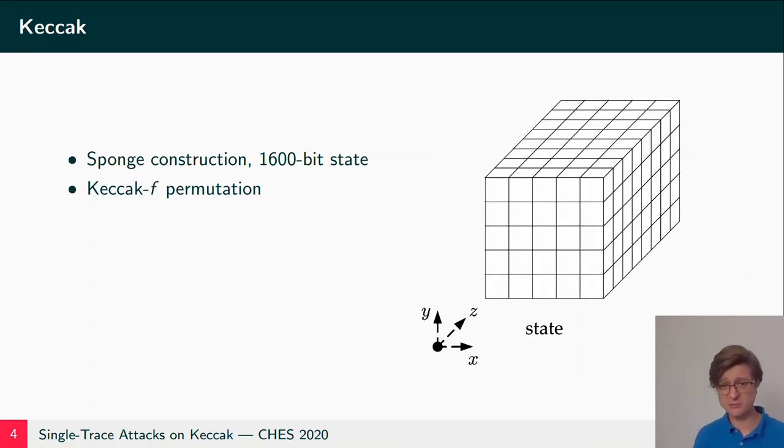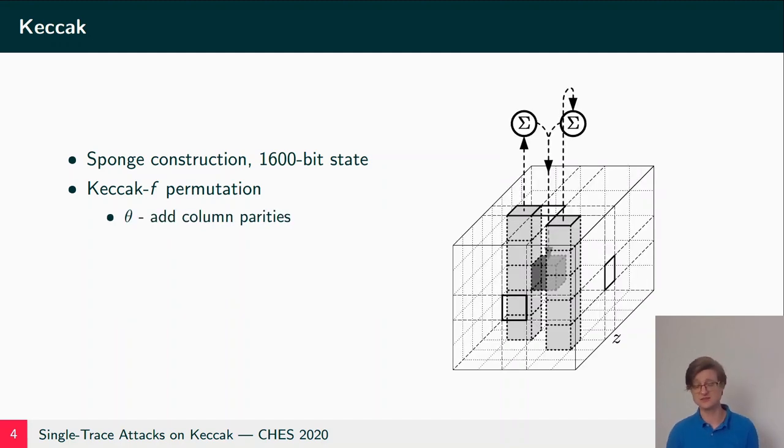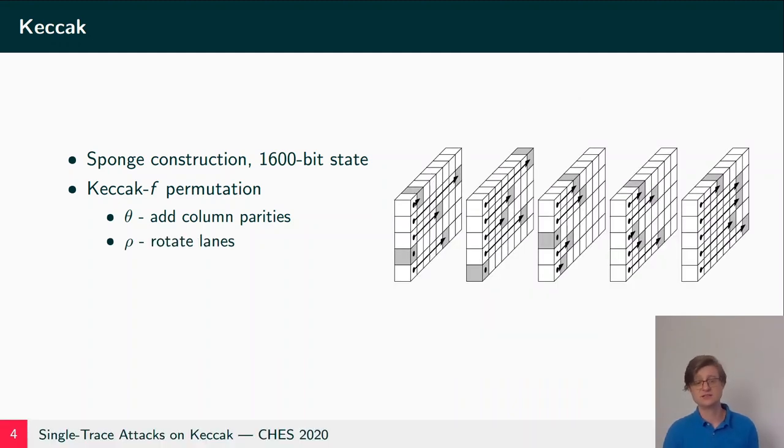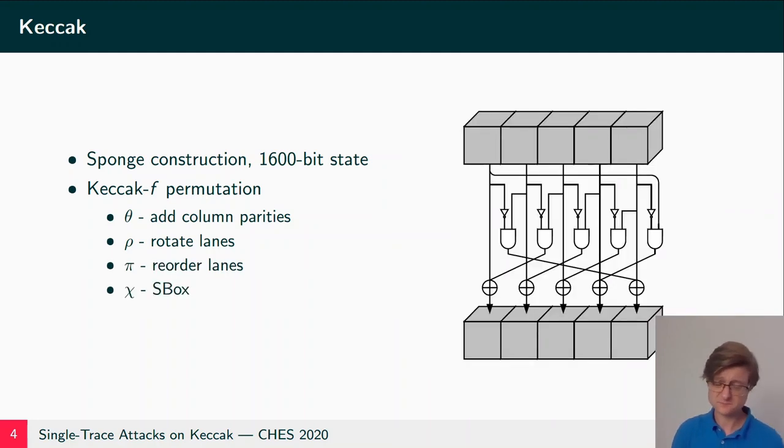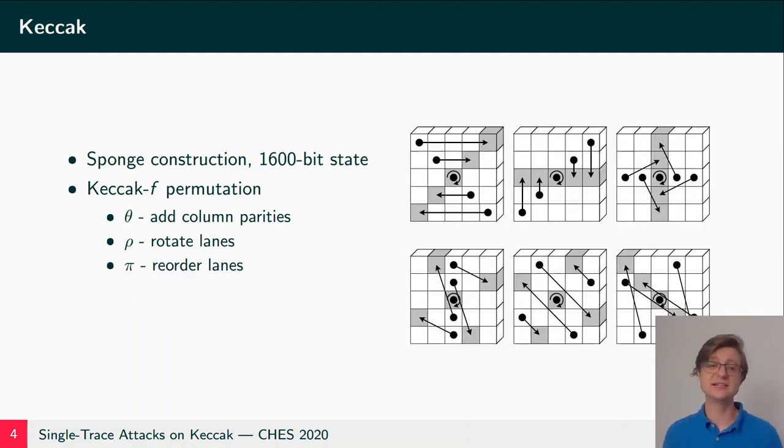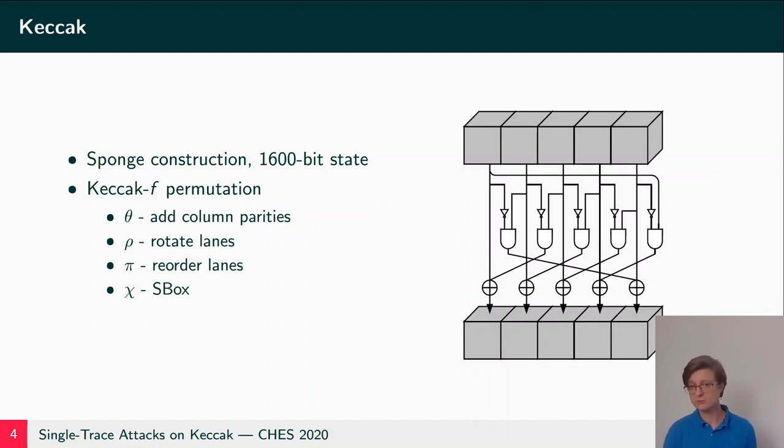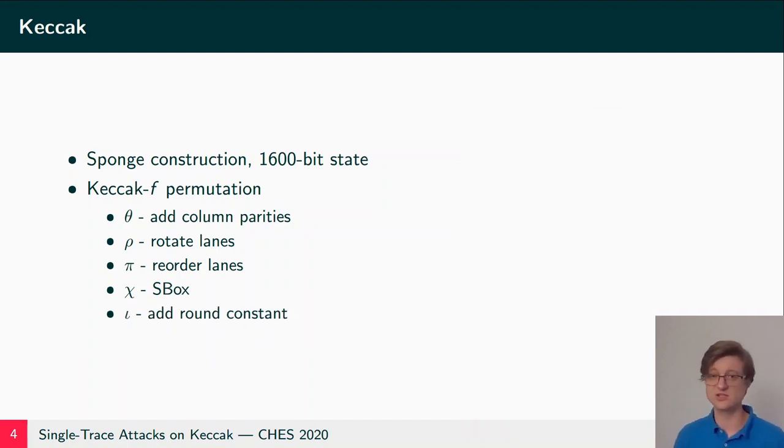As an F function, Keccak uses the Keccak-f permutation which interprets the 1600-bit state in a 3D array, a cuboid of size 5 by 5 times 64. Then it applies 5 transformations on this 1600-bit state. The first step is theta which computes the parity of each column and XORs it onto some bits. The second step is rho which rotates each lane with some given offset. The third operation is pi which reorders the lanes. Then we have chi which is the non-linear operation, the S-box with simple logic gates. And finally we have iota which is the addition of a round constant.